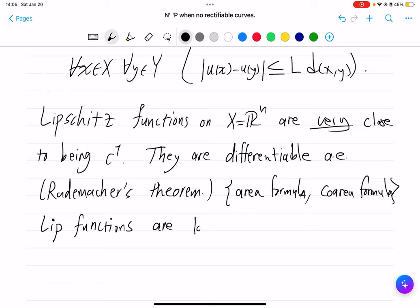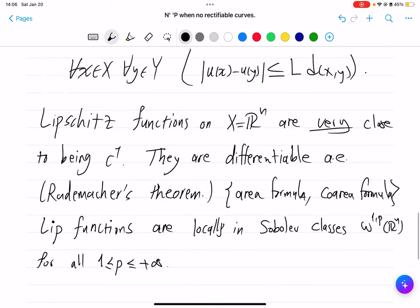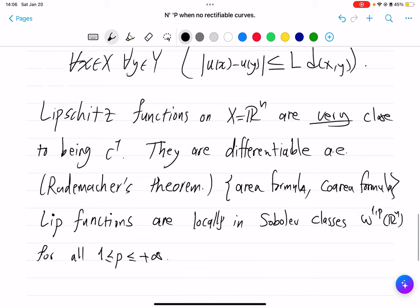At least locally they are in Sobolev classes W^{1,p} of R^n, and this is for all p including infinity. This means that the derivatives are bounded. The norm of the gradient explains this. So the message from this is that Lipschitz functions are quite nice. Once we give up the notion of C1, which is a very Euclidean notion, the Lipschitz functions are quite the best replacement for them.